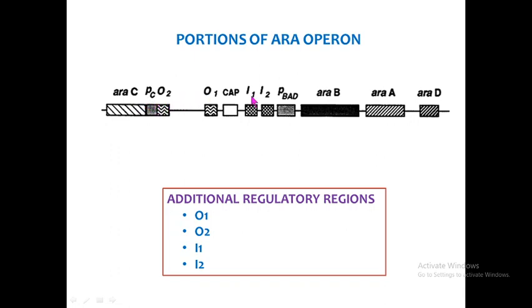Then there is the promoter of the structural genes, called promoter BAD. Following this are the structural genes AraB, AraA, and AraD. Through transcription and translation of these regions, the three enzymes necessary for the breakdown of arabinose are produced.